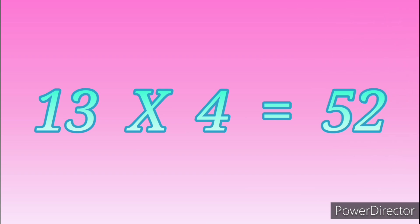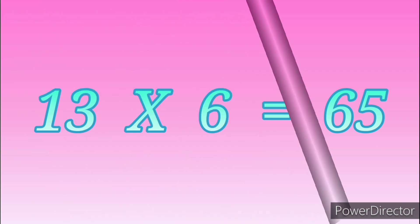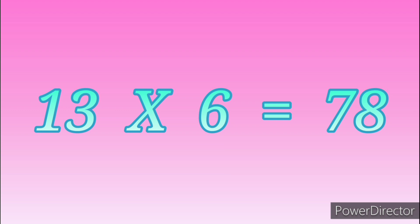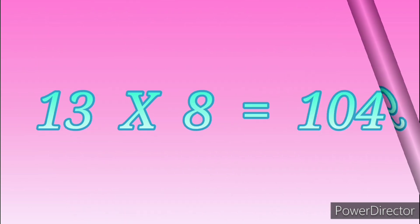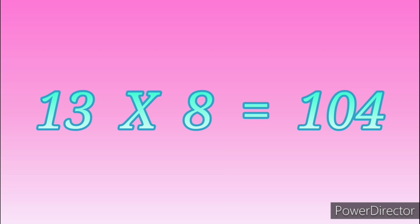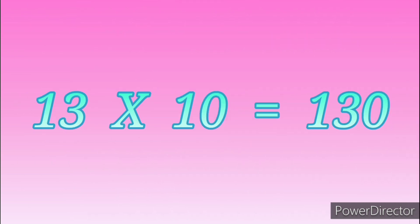13 fours are 52. 13 fives are 65. 13 sixes are 78. 13 sevens are 91. 13 eights are 104. 13 nines are 117. 13 tens are 130.